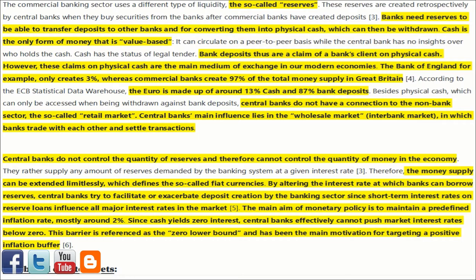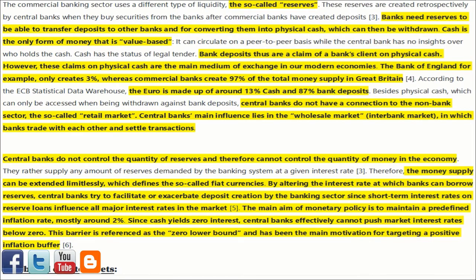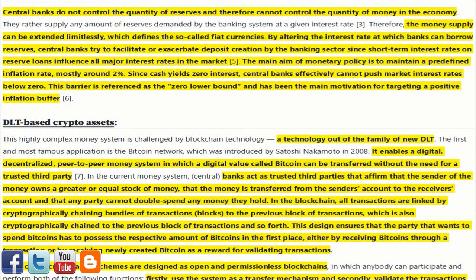According to the ECB statistical data warehouse, the euro is made up of around 13% cash and 87% bank deposits. Besides physical cash, which can only be accessed when being withdrawn against bank deposits, central banks do not have a connection to the non-bank sector — the so-called retail market. Central banks' main influence lies in the wholesale market, or inter-bank market, in which banks trade with each other in subtle transactions. Central banks do not control the quantity of reserves and therefore cannot control the quantity of money in the economy.